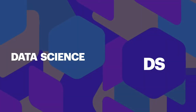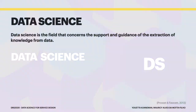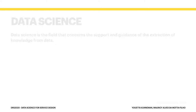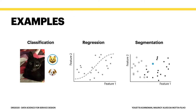So what's data science? Data science is the field concerned with the support and guidance of the extraction of meaningful knowledge from data. Working on quantitative data alone is not enough to call it data science. For example, classification is the task of assigning instances to predefined categories, such as placing an email in the inbox or spam folder.